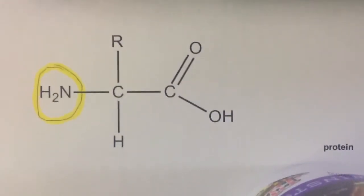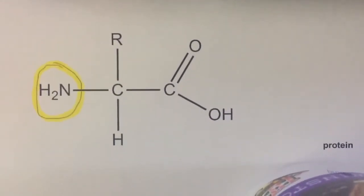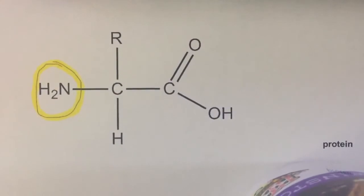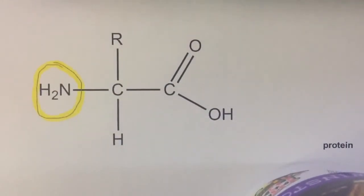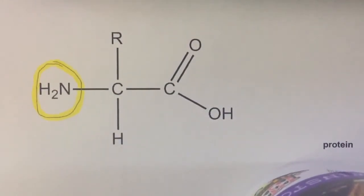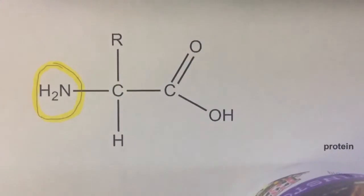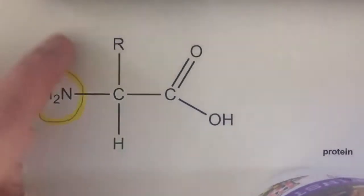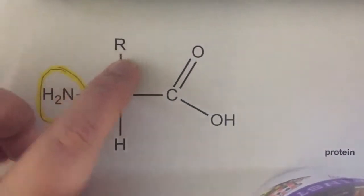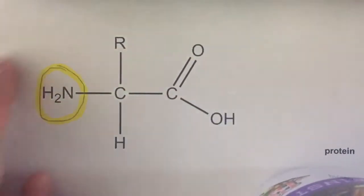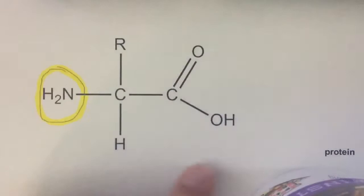I'm showing you the structure of an amino acid right now. An amino acid is the common building block of proteins. Depending on the different R groups, there are 20 different amino acids that make up proteins.